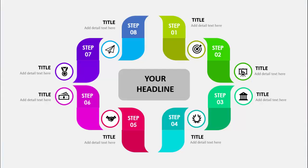In today's tutorial I'm going to show you how to create an eight-point infographic slide in PowerPoint. This is step number one with two different color combinations. You can add a circle with an icon, then add the title and detailed text. This is for step two with a different icon — step three, four, five, six, seven, and step eight. In the center you can add the main title or headline.